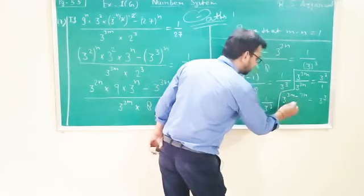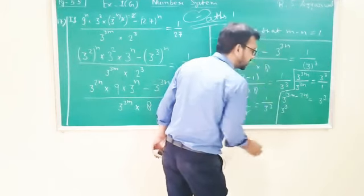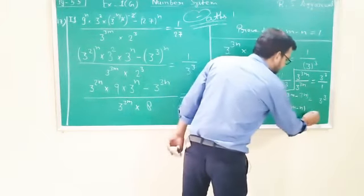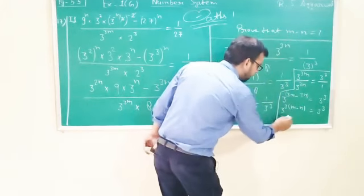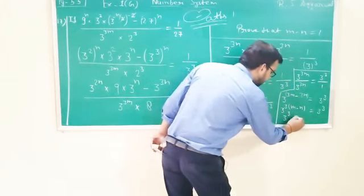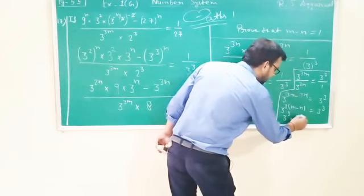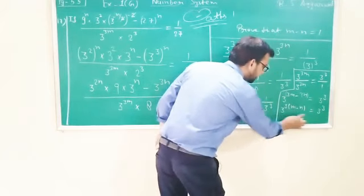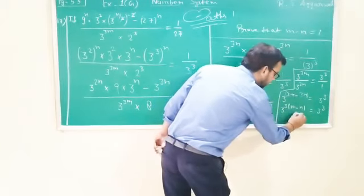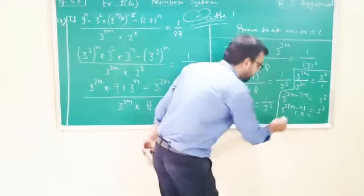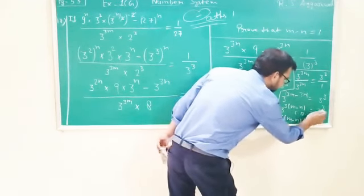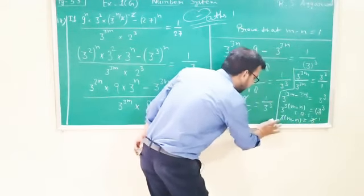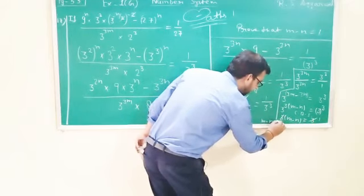3 to the power 3 common. Divide के से — power minus — yes: 3 to the power 3(m minus n) equal to 3 cube. Base same है, so comparing the exponents on both sides: 3 bracket (m minus n) equal to exponent 3. 3 से 3 cancel. So that's why our proof is: m minus n equal to 1.